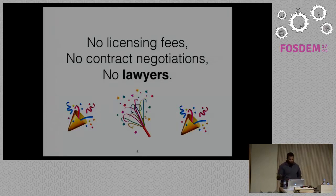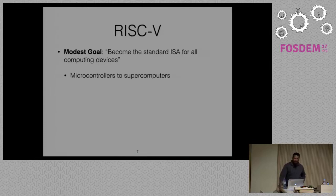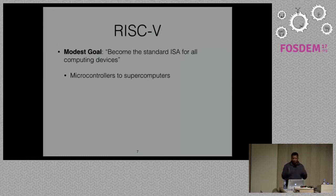I'll give you a quick overview of RISC-V. RISC-V has a very modest goal: to become the standard ISA for all computing devices — from microcontrollers to supercomputers, accelerators, basically any chip. The goal is to go from the many different proprietary ISAs to a single standard ISA, and that would be RISC-V.